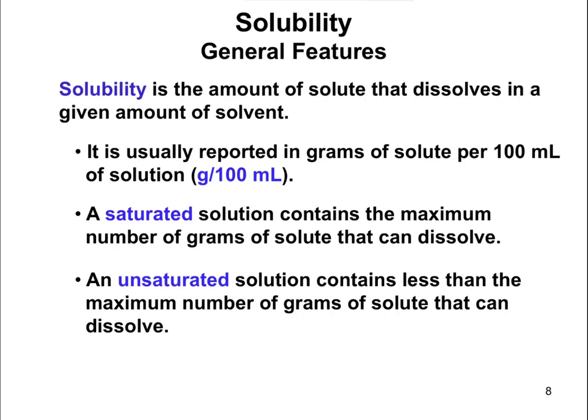Usually we report solubility in terms of grams per 100 milliliters of solution. For example, it might say that the solubility of sugar is 50 grams per 100 milliliters of water. That would tell you that you can dissolve up to 50 grams of sugar in 100 milliliters of water.